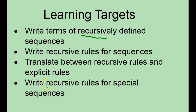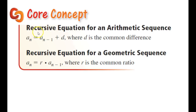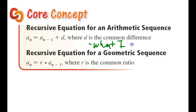We're also going to be writing recursive rules for special sequences. So our core concept covers both types of sequences we've dealt with: arithmetic and geometric. The recursive equation for an arithmetic sequence is a sub n equals a sub n minus 1 plus d, where d is the common difference — what I add or subtract each time. This tells me that I take the previous term and add d to it to get the new term, and then I take that term and add d again to get the next.